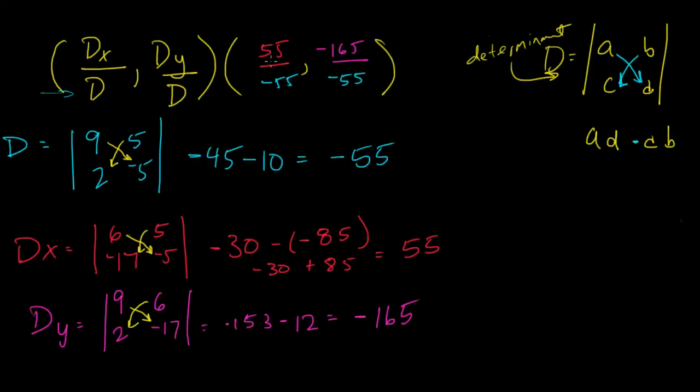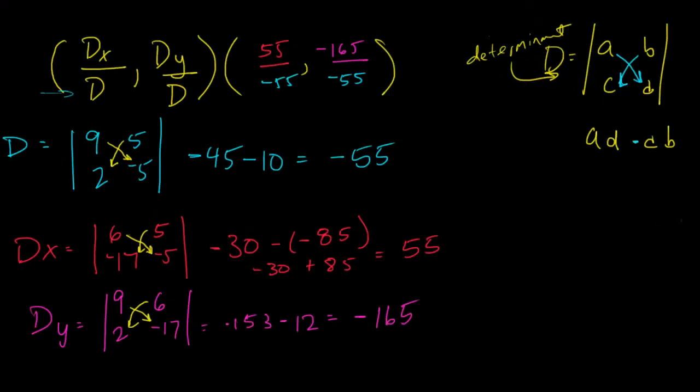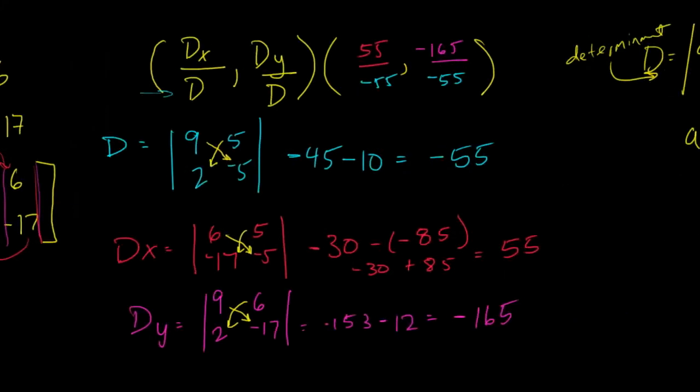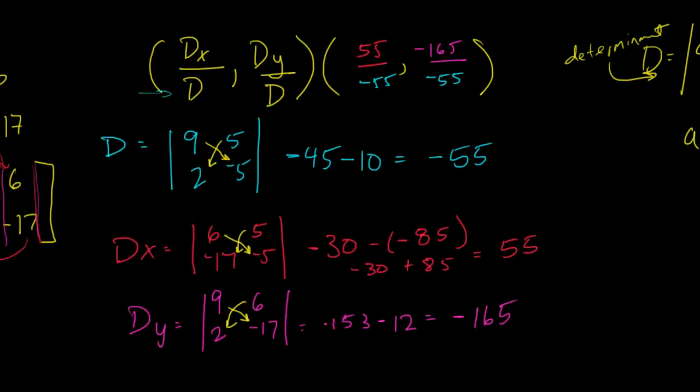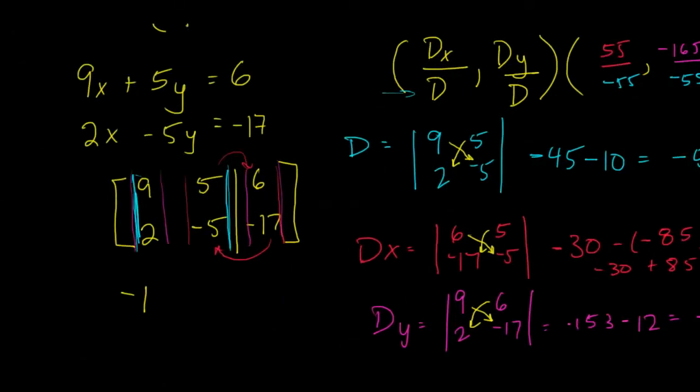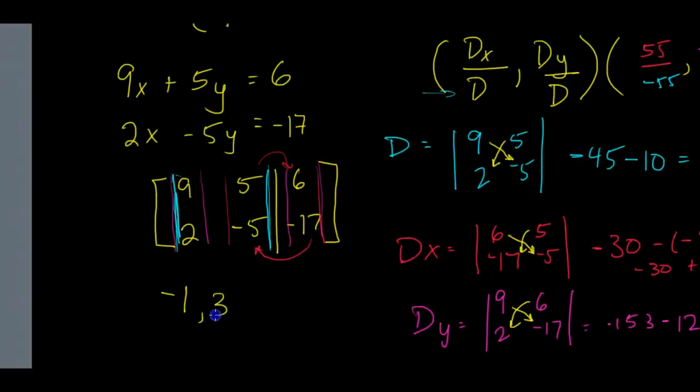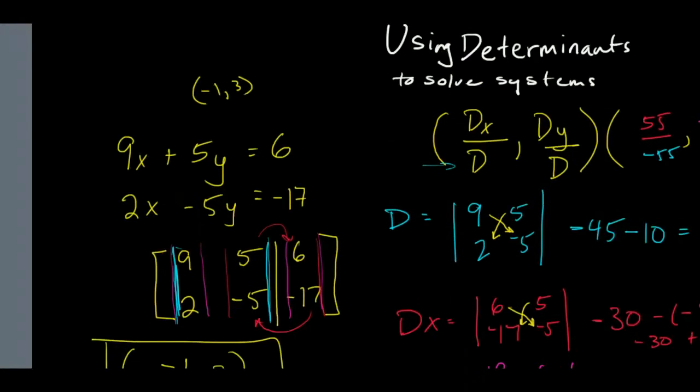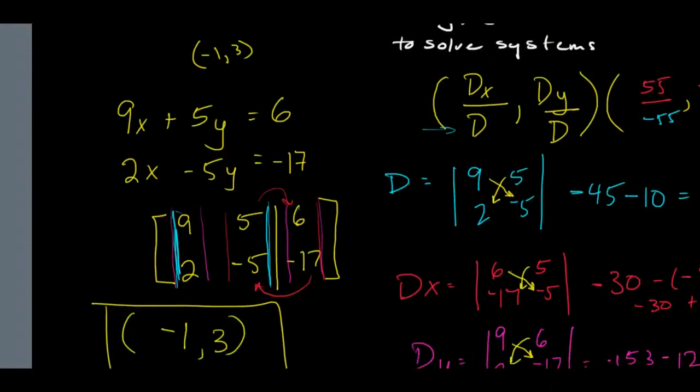So 55 divided by negative 55, that's not that hard. That's negative 1. And then negative divided by negative is positive, and 165 divided by 55 gives us 3. And that will be the solution to our equation, and it matches what we had up there, the solution to our equation.